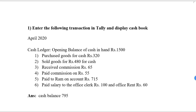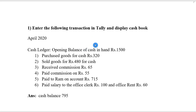Tally exercise number one: enter the following transactions in Tally and display the cash book. For April 2020, the opening balance of cash in hand is 1,500. There are six entries: purchase goods for cash rupees 320, sold goods for rupees 480 for cash, received commission rupees 65, paid commission 55, paid to Ram on account 715, paid salary to the office clerk rupees 100, and office rent rupees 60.